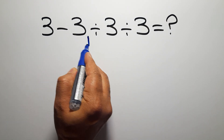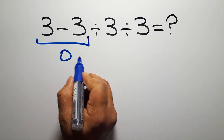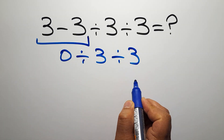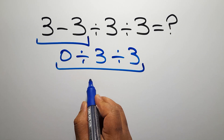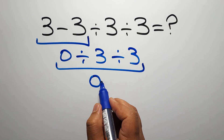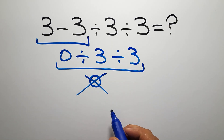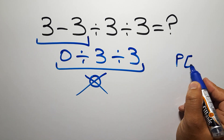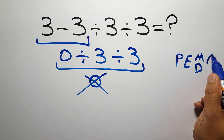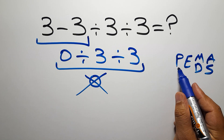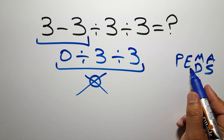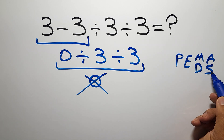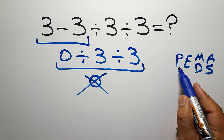3 minus 3 is just 0, and 0 divided by 3 divided by 3 is equal to 0. But this answer is not correct, because according to the order of operations, which is PEMDAS: P stands for parentheses, E stands for exponents, M and D stands for multiplication and division, and A and S stands for addition and subtraction.